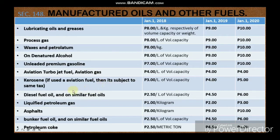Diesel fuel oil and similar fuels have a rate of 6 pesos per liter of volume capacity. Liquefied petroleum gas is 3 pesos per kilogram. Asphalt is 10 pesos per kilogram. Bunker fuel and other fuel oils are 6 pesos per liter of volume capacity, and petroleum coke is 6 pesos per metric ton.